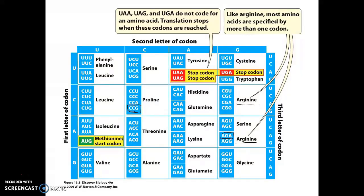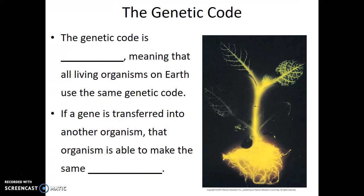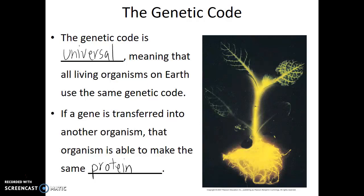There is degeneracy in the genetic code. One of the amazing things about this genetic code is that it is a universal genetic code — not just for bacteria or for eukaryotic cells, but for all living organisms on earth. This means that if a gene is transferred into another organism, that organism is able to make the same protein. What we see in this picture is actually a glowing tobacco plant. It is glowing because the gene that fireflies use to glow was transferred into it at an early embryonic stage. This plant was able to produce a functional animal protein because it was given the DNA — the instructions on how to make that protein.